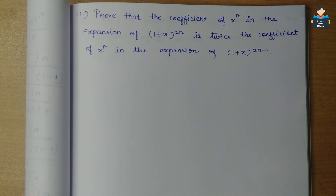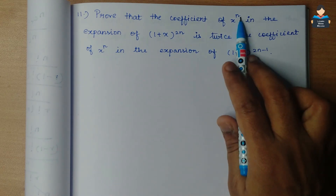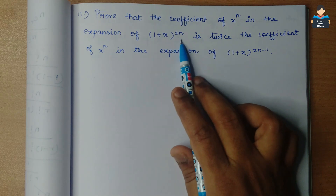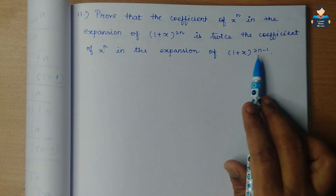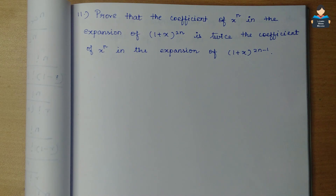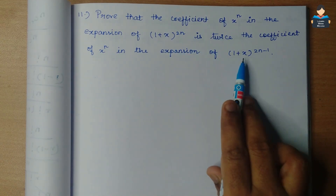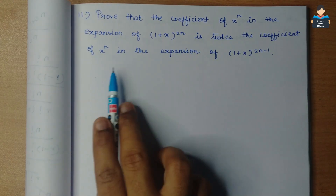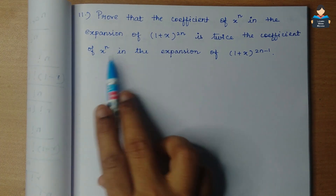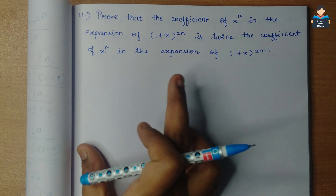Hello everyone, welcome to our channel. In this video, 11th standard NCERT Maths Exercise 8.2, problem 11. We need to prove that the coefficient of x to the power n in the expansion of (1+x)^2n is twice the coefficient of x^n in the expansion of (1+x)^(2n-1). Two expressions are given, and we need to show that the x^n coefficient in the first is twice that in the second.